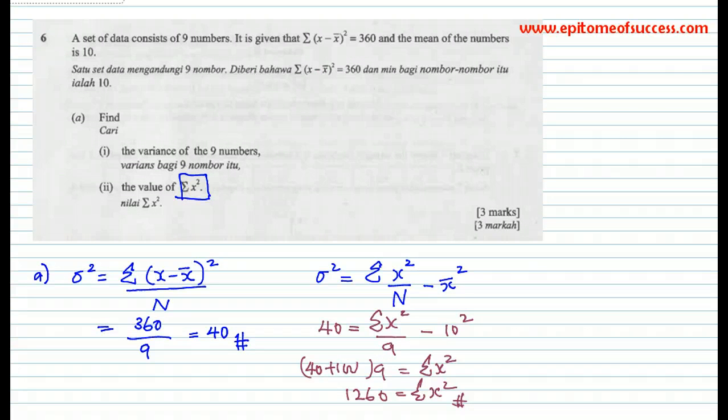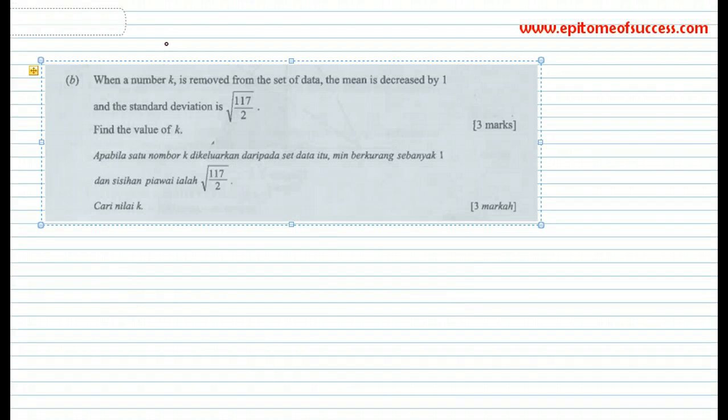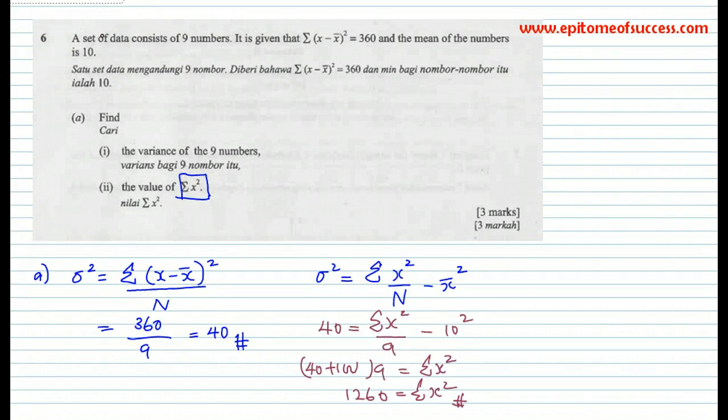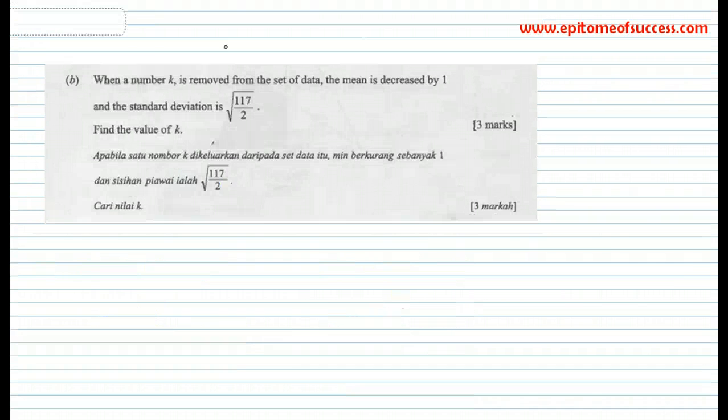Let's have a look at the next question. This is B, part of the same question. When a number K is removed from the set of data, the mean is decreased by 1 and the standard deviation is √(117/2). Find the value of K. This is the challenging one. A lot of students give up on this.